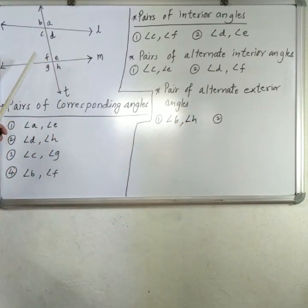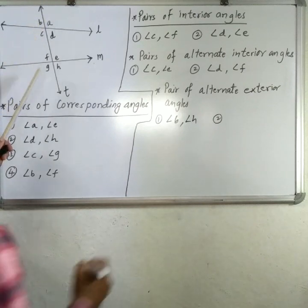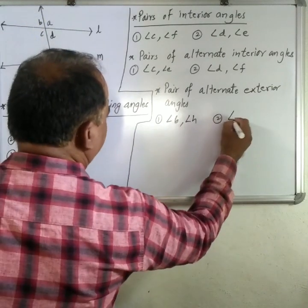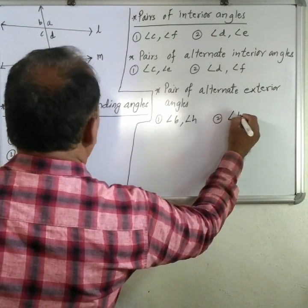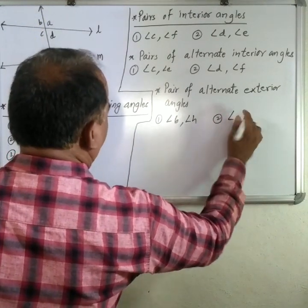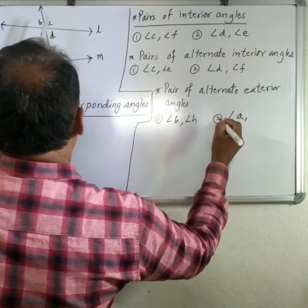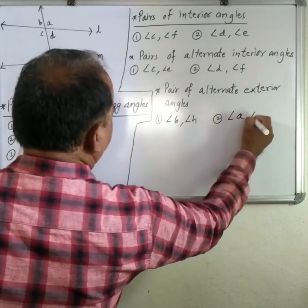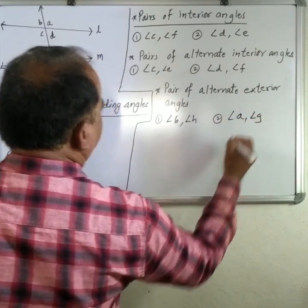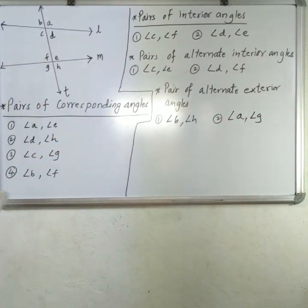The second pair of alternate exterior angles is angle A and angle G.